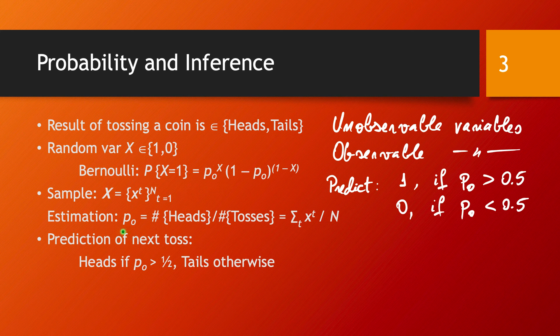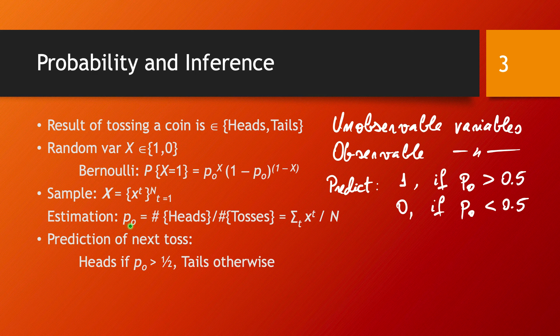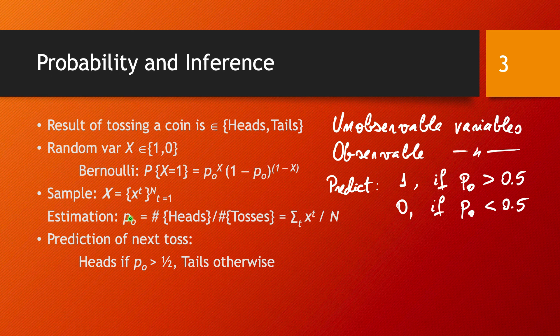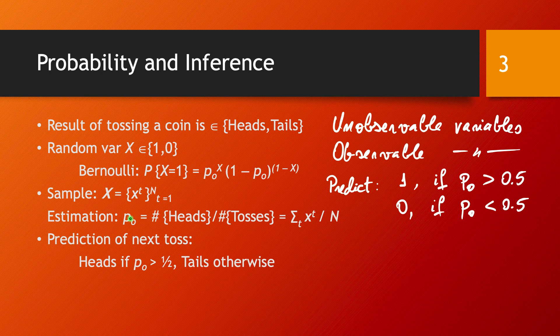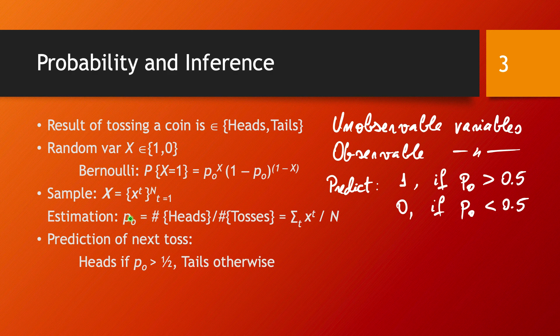Then based on this sample, we can estimate the probability P0 as the number of one outcomes divided by the total number of outcomes. Based on this estimation of P0, we can predict the next outcome: 1 if our estimation of P0 is larger than 0.5, and 0 if it's smaller than 0.5.